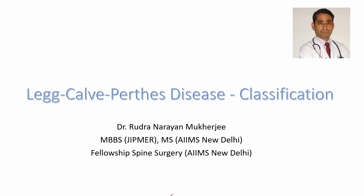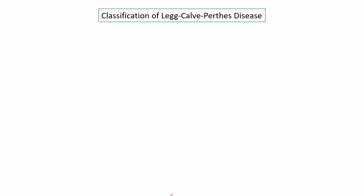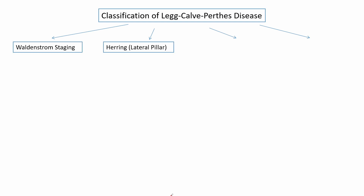Classification of Legg-Calvé-Perthes Disease. Many classification systems for Perthes disease have been described. Among these, four are very important for postgraduates: the Waldenstrom staging, the Herring lateral pillar classification, the Catterall classification, and the Salter-Thompson classification.